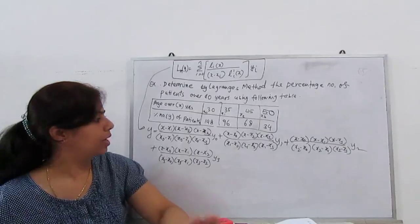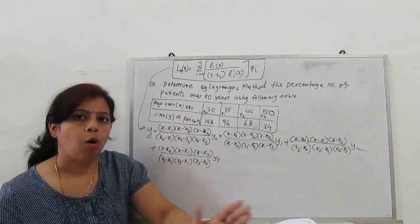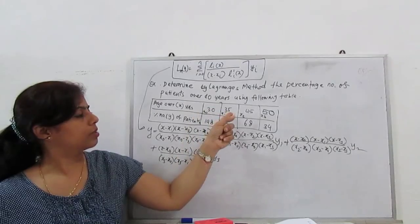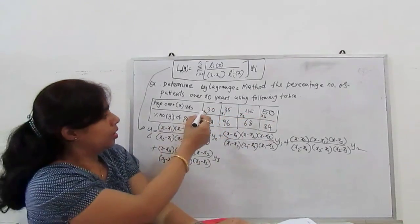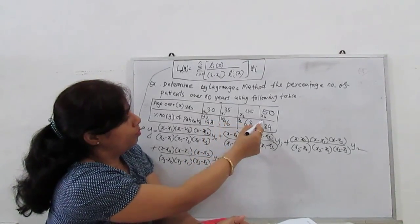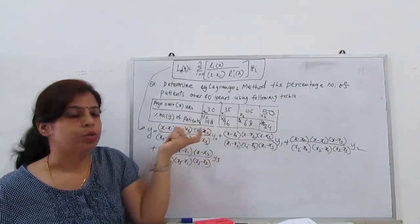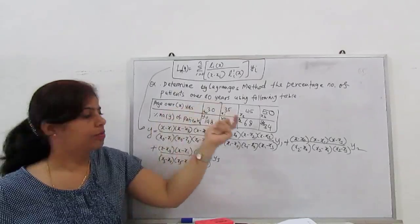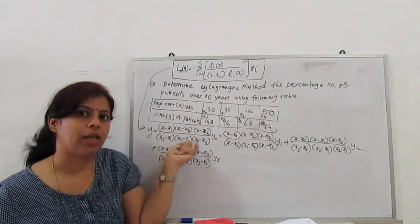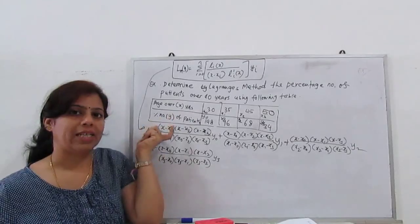First we see the Lagrangian formula summation i from 0 to n of Li(x)/(x-xi) L'(x) times yi. When we construct this formula, it's very easy. How many variables?